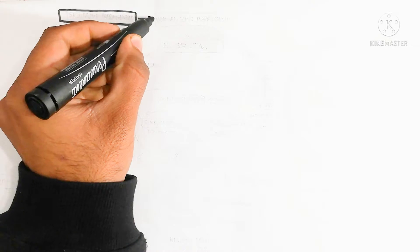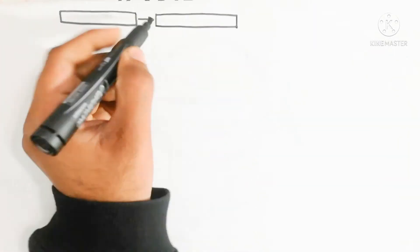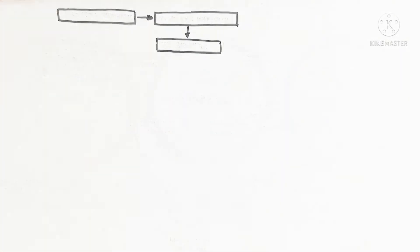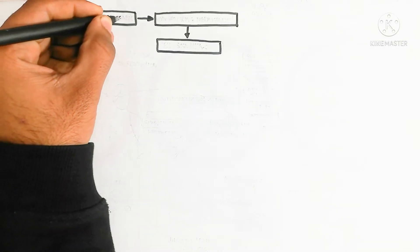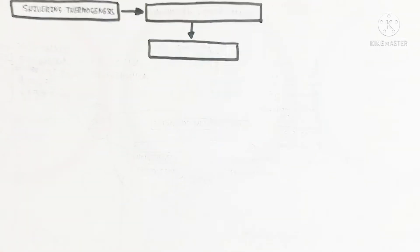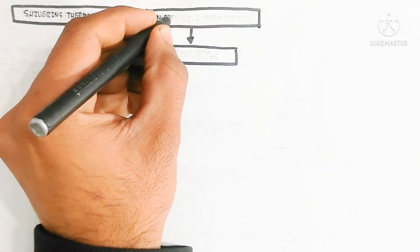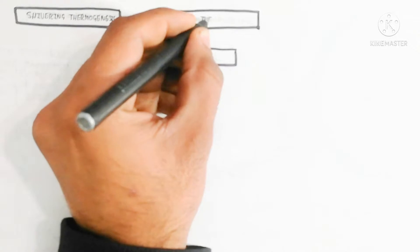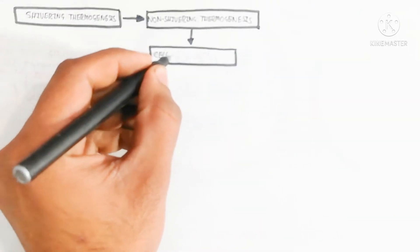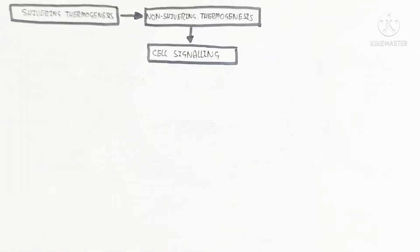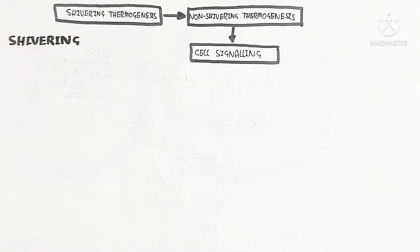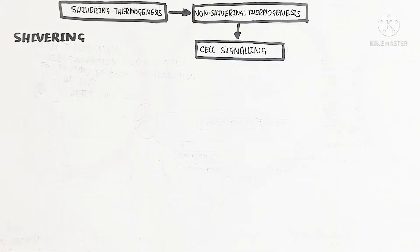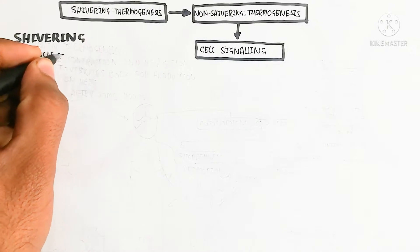In this video we will discuss non-shivering thermogenesis. First, we need to understand shivering thermogenesis. Shivering thermogenesis is a quick response to cold — sudden cold stimulates shivering thermogenesis, which later converts into non-shivering thermogenesis through cell signaling. During shivering thermogenesis, continuous muscle contraction and relaxation cause the body to vibrate and produce heat.